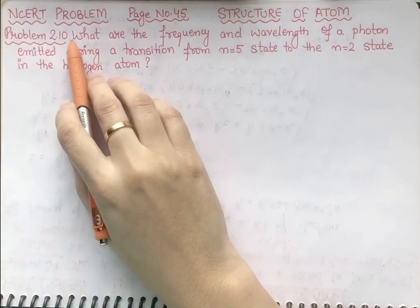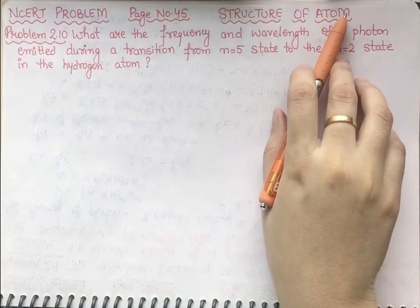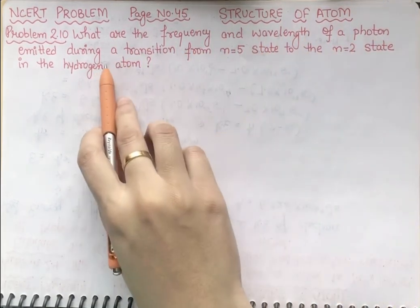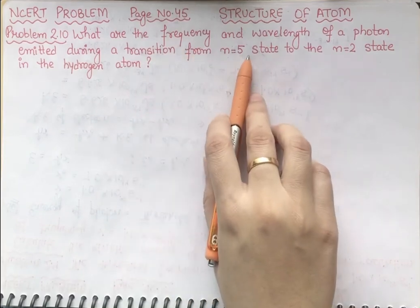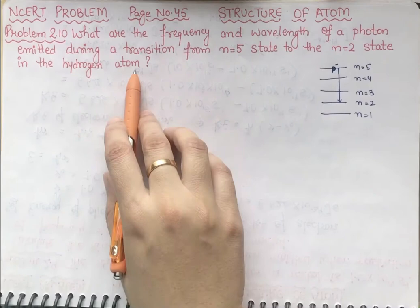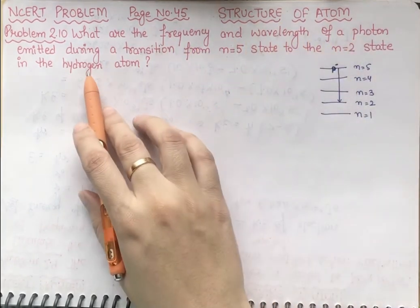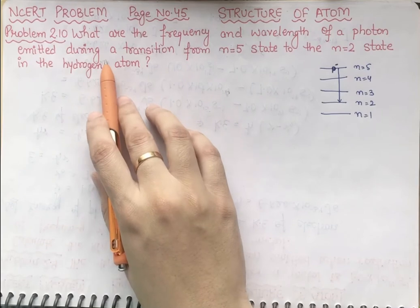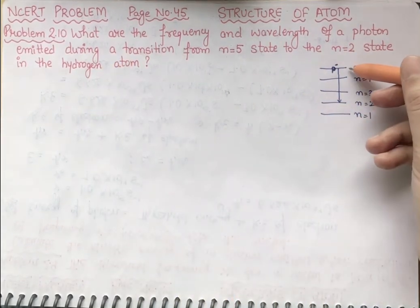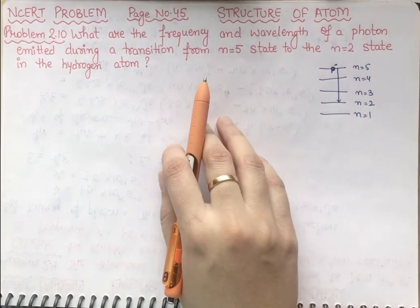Students, this is problem number 2.10 from page number 45 of Structure of Atom. In the statement, they are asking: what are the frequency and wavelength of a photon emitted during a transition from n equal to 5 state to the n equal to 2 state in the hydrogen atom? They are asking you to find the frequency and wavelength of a photon when, in the case of the hydrogen atom, it is emitted from orbit 5 to orbit 2.